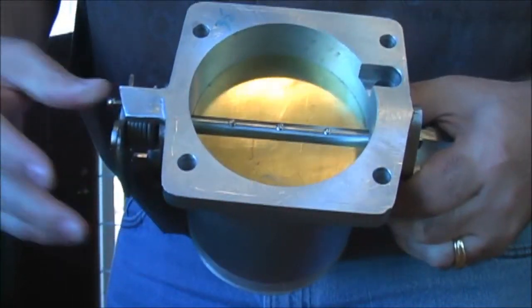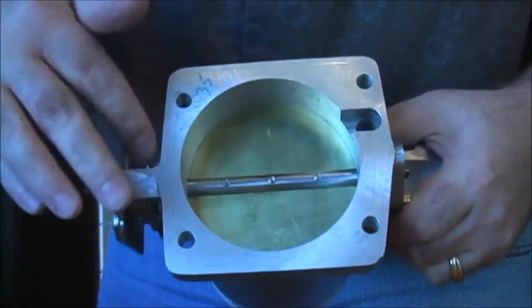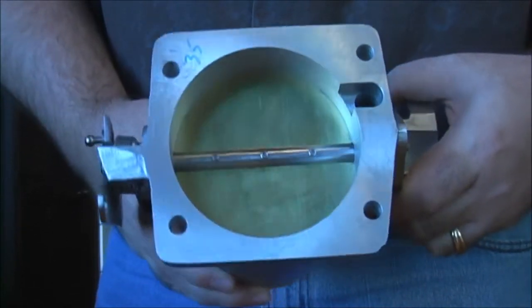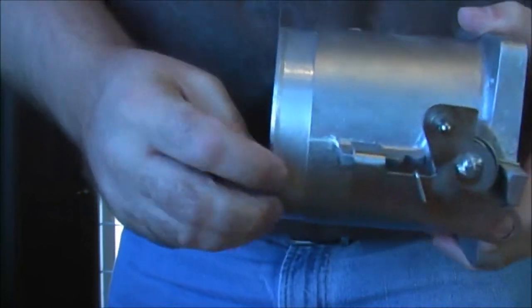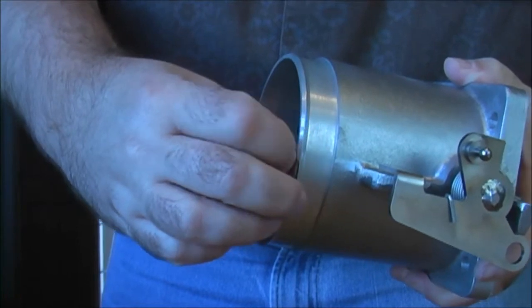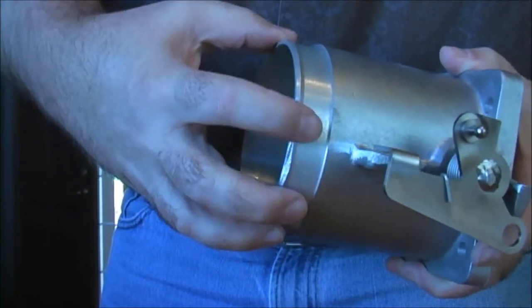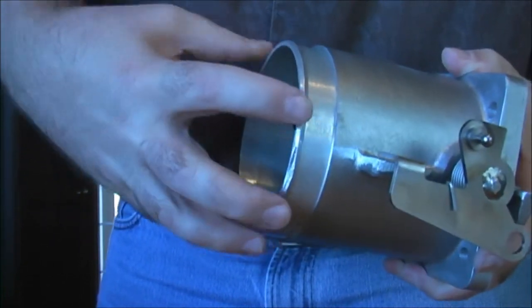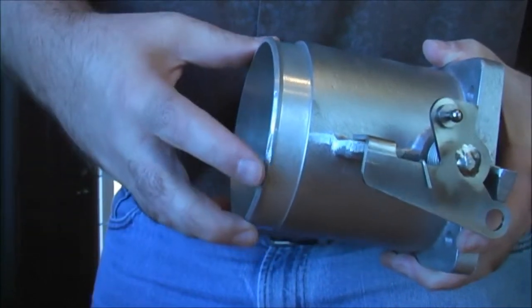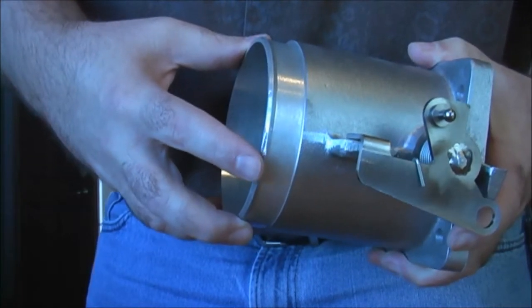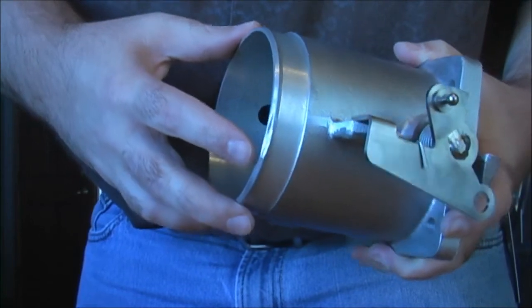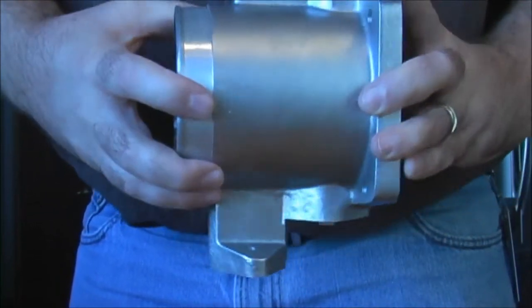Standard bolt pattern that will bolt up to the stock manifold as well as many of the custom ones that have been made. And it does have a little roll machine lip here to help with retention of any type of hose, say you were pressurized prior to the throttle body if you're running a turbo or a Paxton or some type of compressor like that.